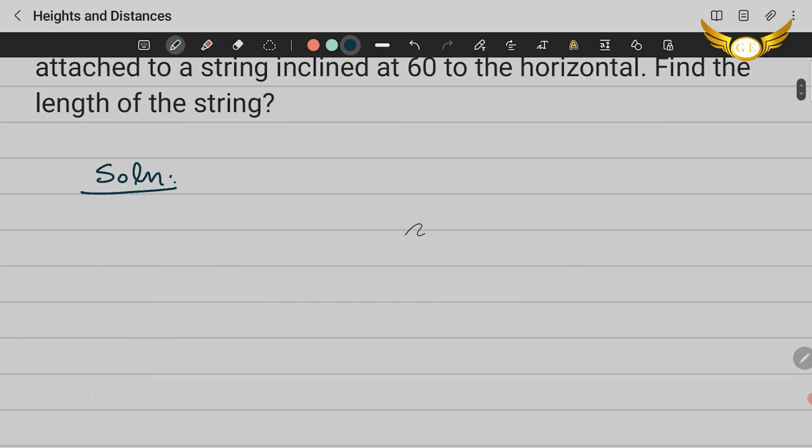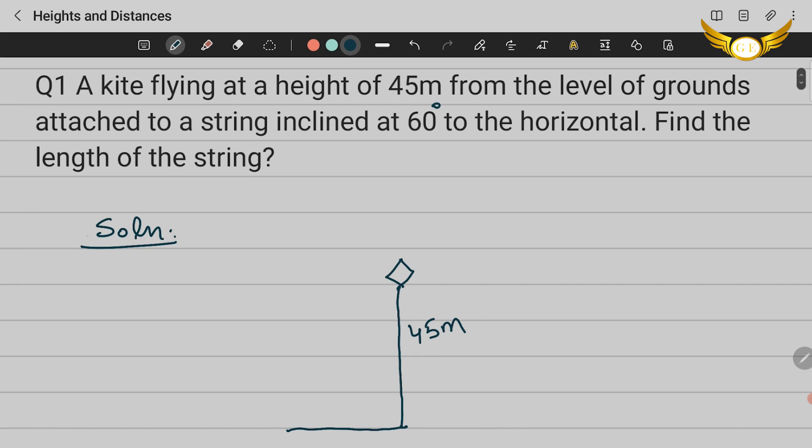They've given that a kite is flying at a height of 45 meters from the ground. This is the ground and it is attached to a string that is inclined to the horizontal at 60 degrees. So we have the height, we have the angle of inclination. This makes a triangle where this is the perpendicular, this is the hypotenuse and this is the base.